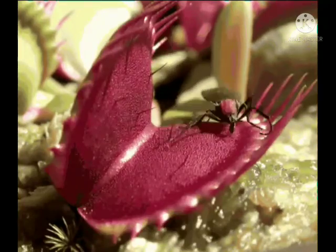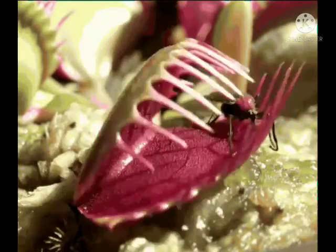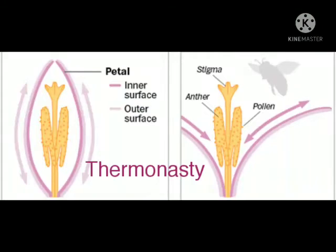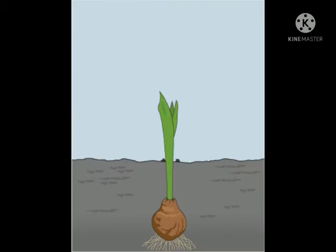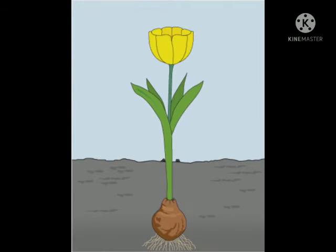The Venus Flytrap is native to the Southeastern US. It is also kept as an indoor plant. Next is Thermo Nasty, which is the movement of a part of a plant associated with a change in temperature. For example, Tulip flowers bloom as the temperature increases.